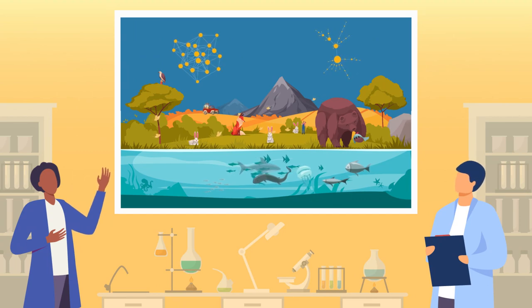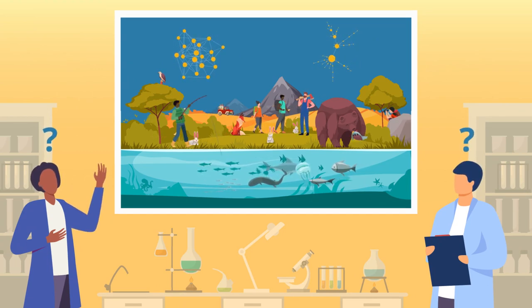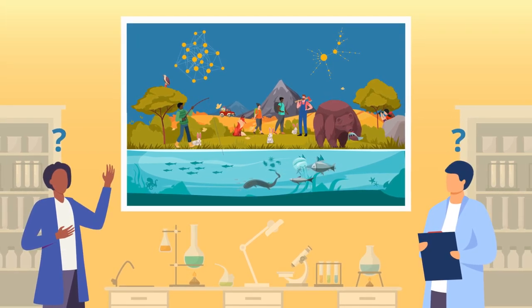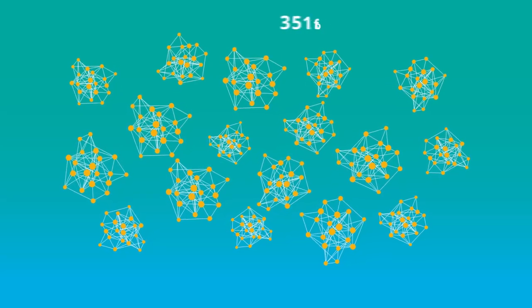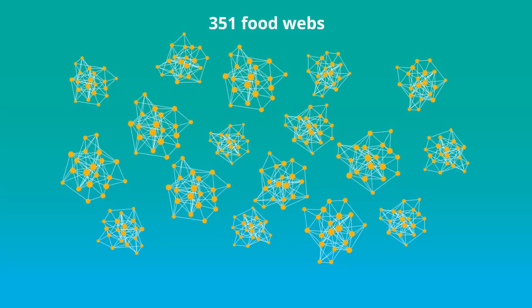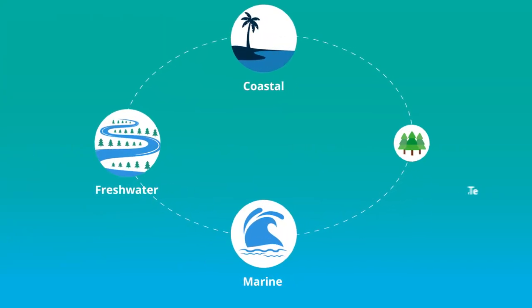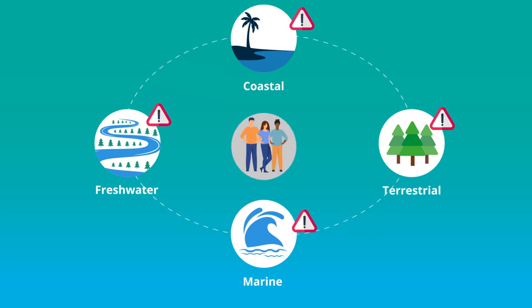Moreover, researchers are divided on whether and how the environment or human interference would affect empirical food webs. To paint a clearer picture, researchers from Europe analyzed 351 empirical food webs, encompassing coastal, freshwater, marine, and terrestrial ecosystems, to understand the impact of human disturbances on these networks.